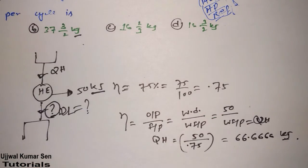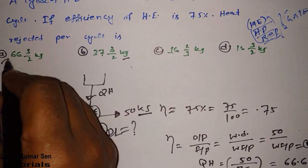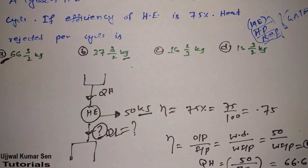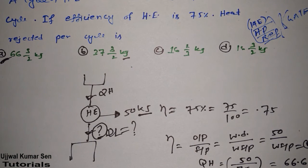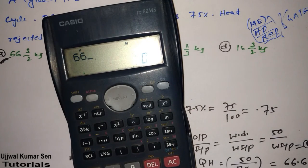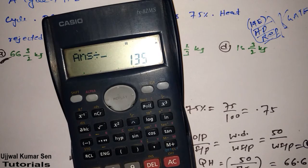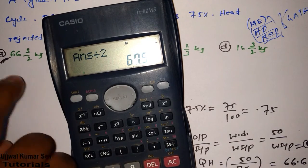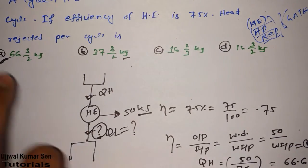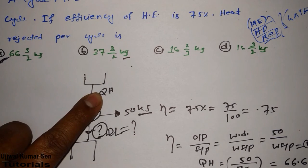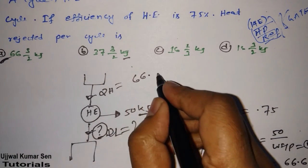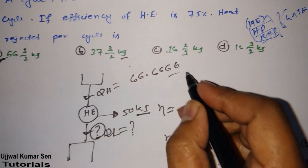This is not the answer here. They have given options, most probably it can match with the answer. Maybe it can match the answer. So let's do this: 66 multiplied by 2 plus 3 division 2. Yeah, almost it's same matching with the answer. So this is not the actually right answer because what we have find out till now is QH is equal to 66.666 kilojoule.